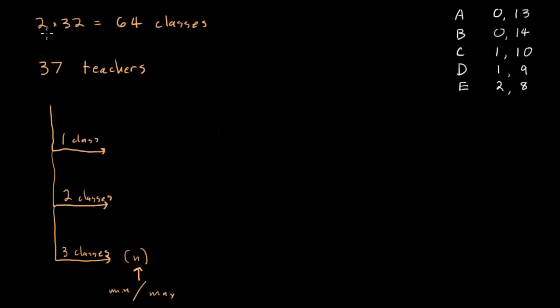In the question stem we learn that we have 2 times 32 or 64 total classes. We also learn that we only have 37 teachers. And we learn that each of those teachers teaches either one or two or three classes. And our job is to find the minimum or maximum possible number of teachers who could teach three classes.